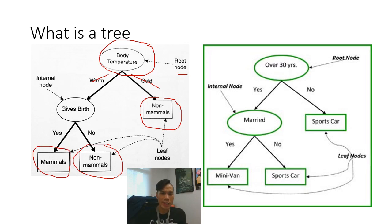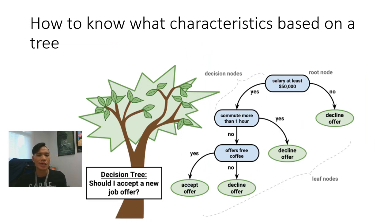If you're looking at deciding on what type of things you want to find out based on the leaf nodes, just look at all the leaf nodes and then traverse the tree up and then you will see the characteristics. For instance, like this one, the non-mammal's cold body temperature is known as a non-mammal. But if it's a warm body temperature and it doesn't give birth, it is also known as a non-mammal. So that is just what a tree is. You can also do the same thing by traversing this particular tree here to find out.